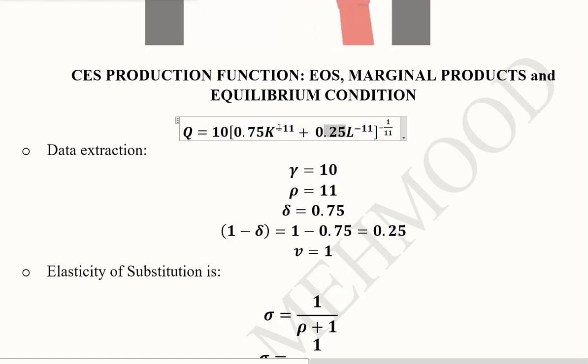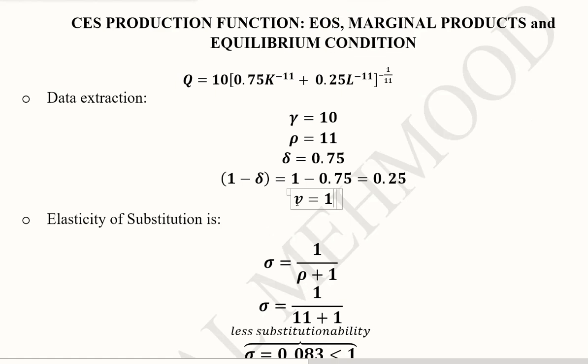This is V, and delta times rho with a minus sign. So this is why I have extracted these values: 10, 11, 0.75, and 0.25, and 1. Now we can easily calculate the elasticity of substitution. Before we go ahead, just a reminder that V is equal to 1, so this is a production function with constant returns to scale.